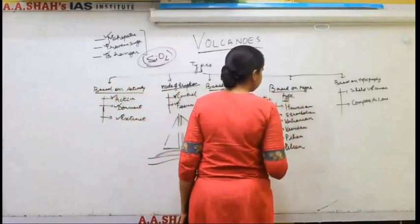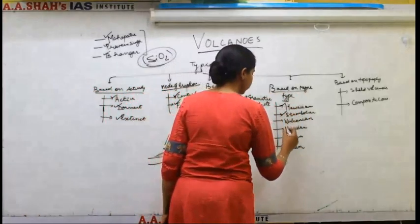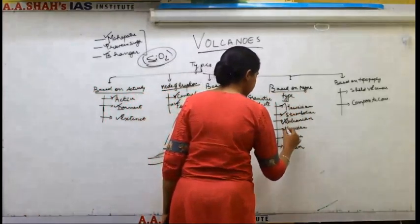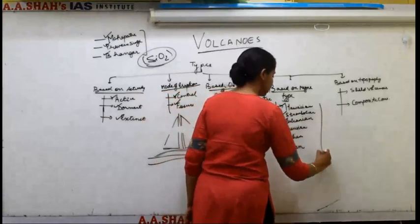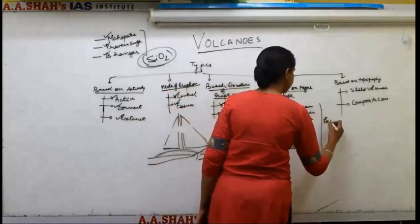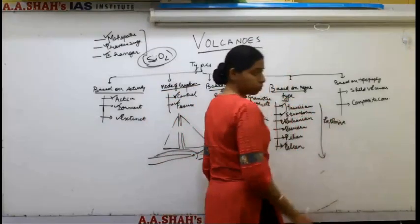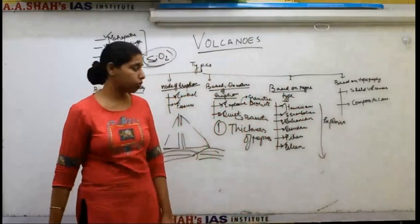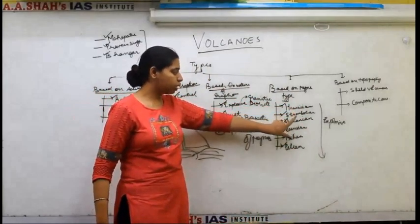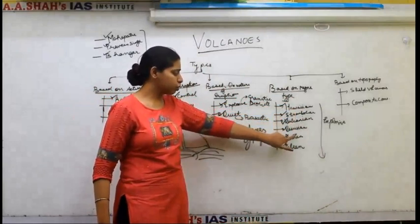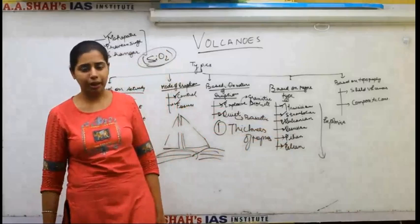Next, based on the type of magma, there are the following types: Hawaiian, Strombolian, Vulcanian, Vesuvian, Pelean, and Plinian. When you go from Hawaiian to Plinian, the explosive nature goes on increasing. So the level of explosive eruptions increases from Hawaiian through Strombolian, Vulcanian, Vesuvian, Pelean, to Plinian.